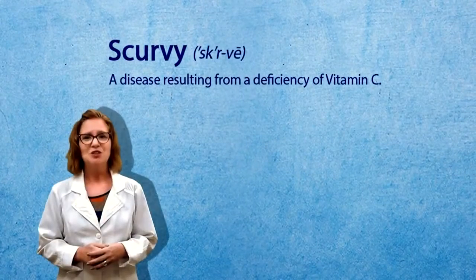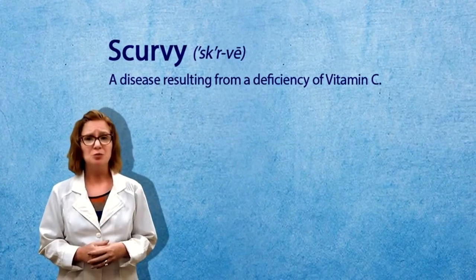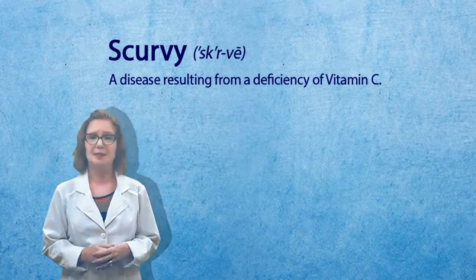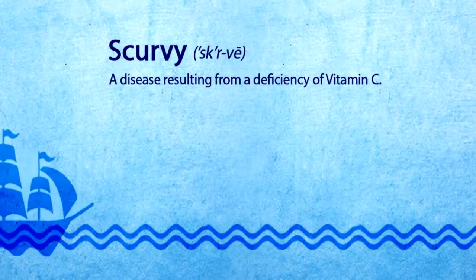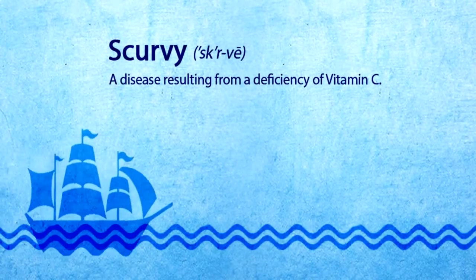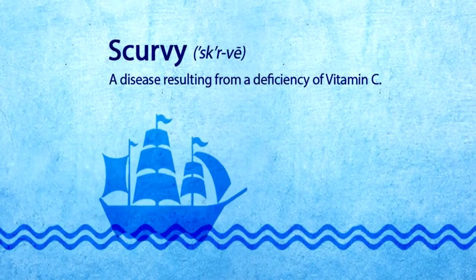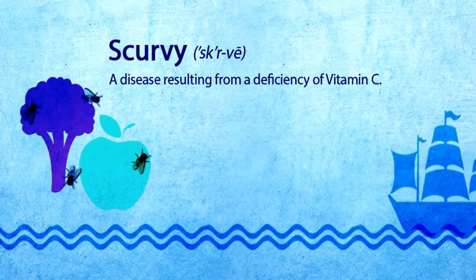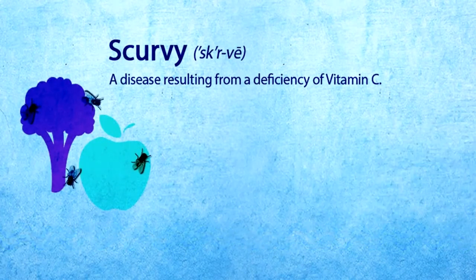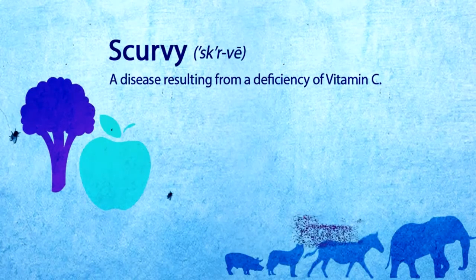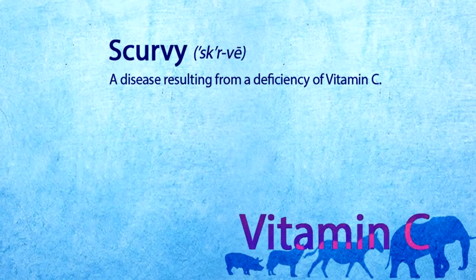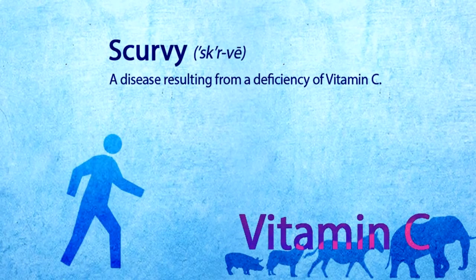Scurvy. Scurvy is a disease resulting from a deficiency of vitamin C. At one time, scurvy was common among sailors and pirates at sea longer than perishable fruits or vegetables could be stored. Scurvy does not occur in most animals because they can synthesize their own vitamin C.